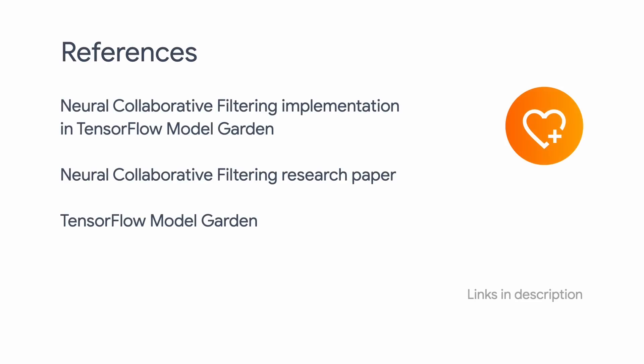To summarize, today we walked through how to build a neural collaborative filtering model with the TensorFlow 2 API. You can check out the original research paper and the code in TensorFlow Model Garden for additional details. Thank you for watching this video — please stay tuned for more updates from us.